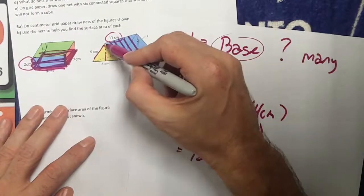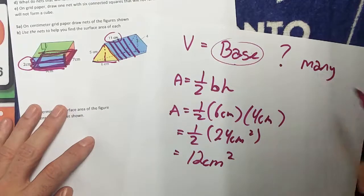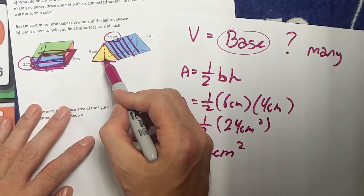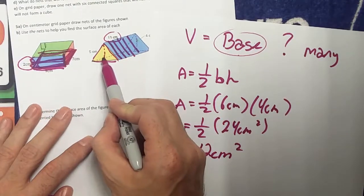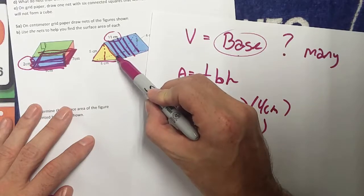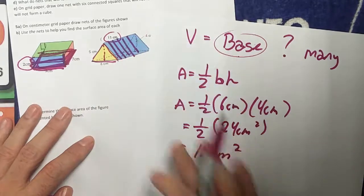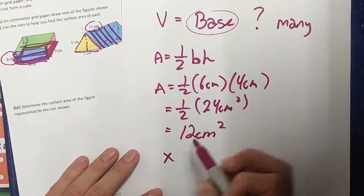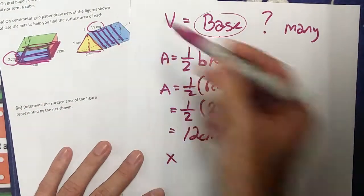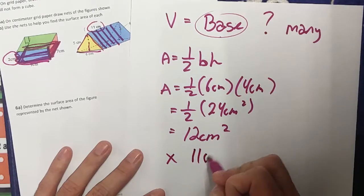So the area of this triangle is 12 centimeters squared. Well, this is my base. To find the volume, how many times do I have this triangle? How many times do I have this 12 centimeters squared? I have 11 times. So I'm going to need to multiply this by the height of the shape, which is 11 centimeters.